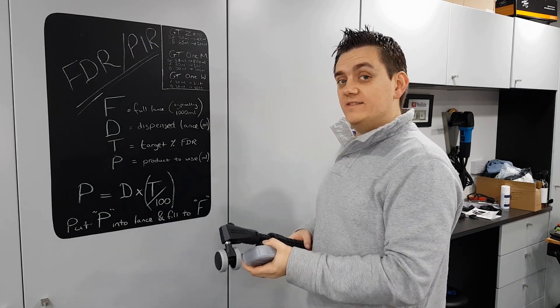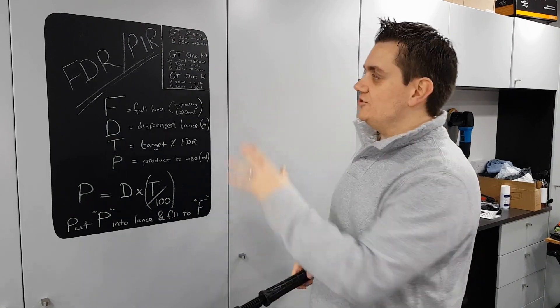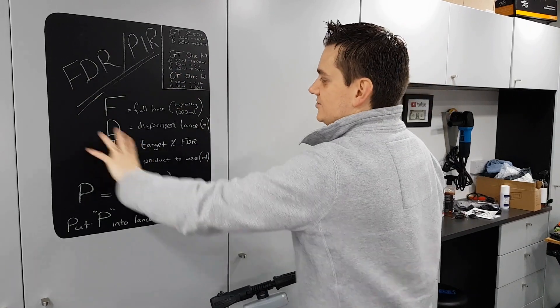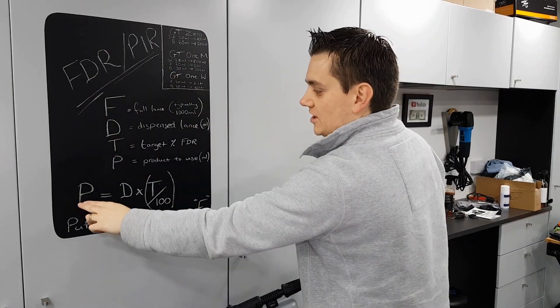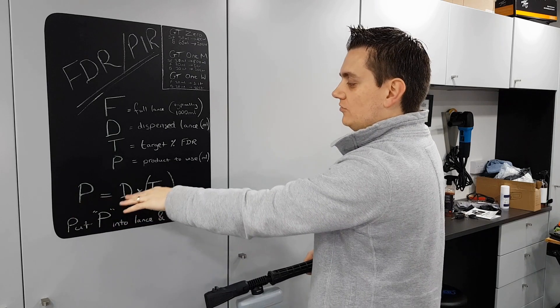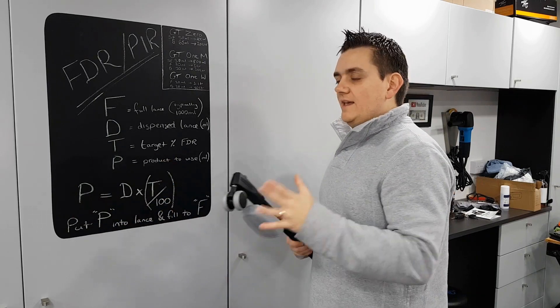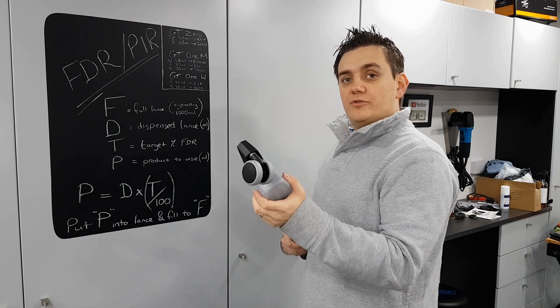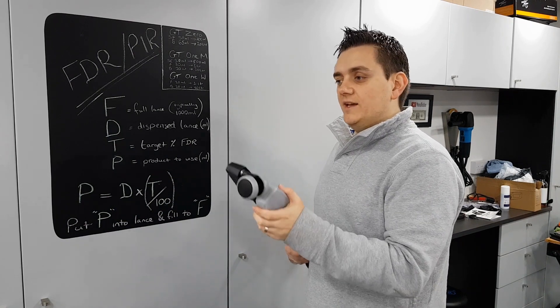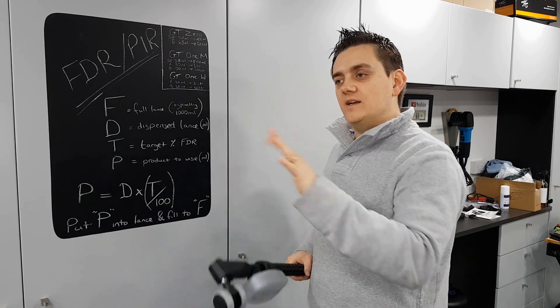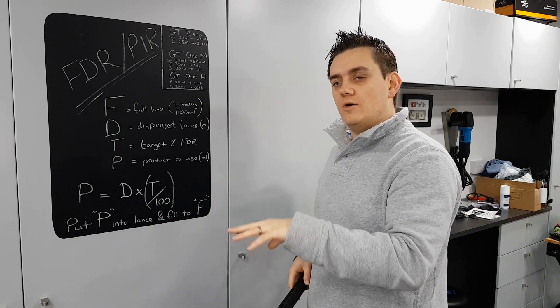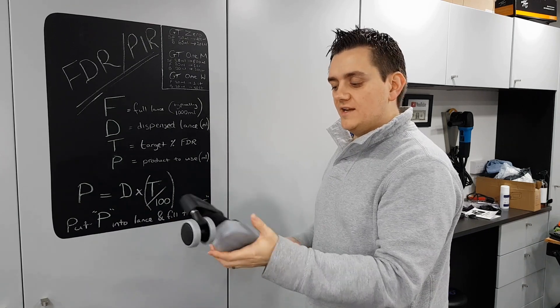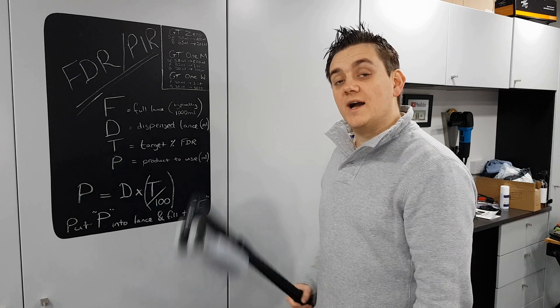Hopefully that wasn't too complicated. And if it is, just always refer to this. So all of this is just literally what each of these things are, and that is the formula. So P equals D times T over 100. Easy enough to do. So I'm going to run through this now, show how I do it very quickly, and then we'll go and put it on the car. Again, you can see that in the undercarriage cleaning video. This isn't about the undercarriage cleaner, it's just to show you how to get that PIR ratio.